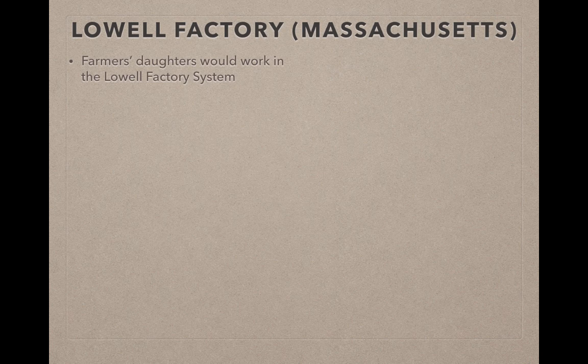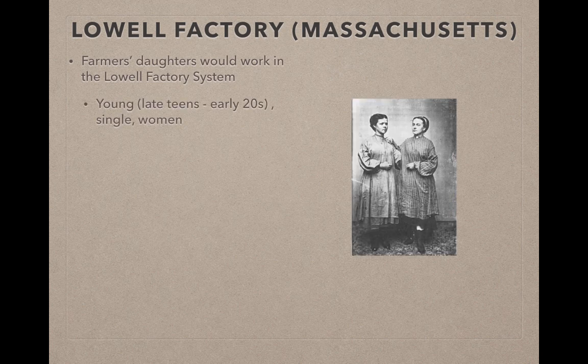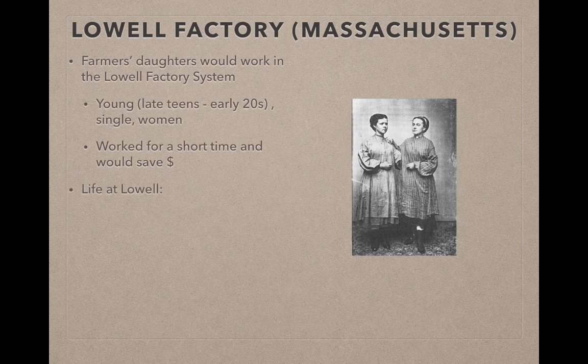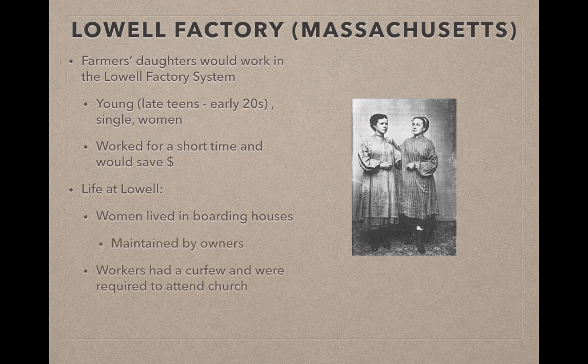At the Lowell factory system, farmers' daughters would work there. If you were a farmer with a young daughter, you'd work on the farm all day while your daughter went to work at Lowell for a couple of years. These were often young, late teens to early 20s, single women. They would work for a short time and save money, after which many would get married or move back home. Life at Lowell was very organized — women lived in boarding houses, maintained by the owners, had a curfew, and were required to attend church. They often did the same task over and over in the factory.